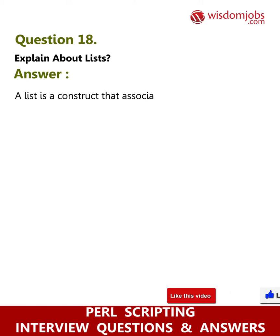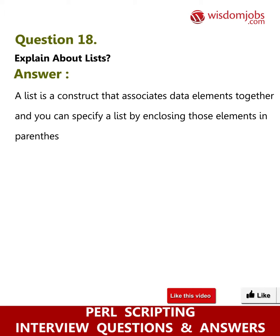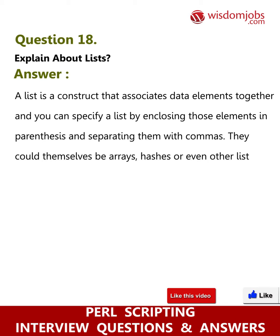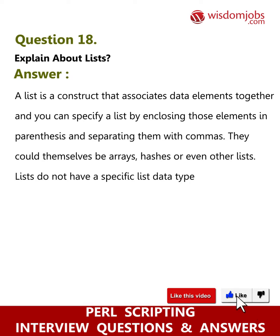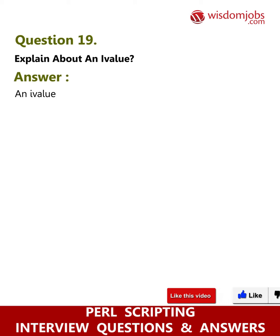Question 18: Explain about list. Answer: A list is a construct that associates data elements together. You can specify a list by enclosing those elements in parentheses and separating them with commas. They could themselves be arrays, hashes, or even other lists. Lists do not have a specific list data type.